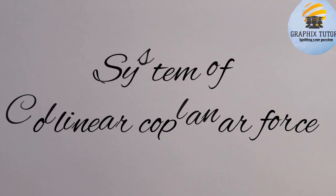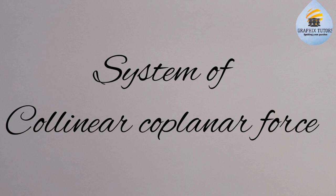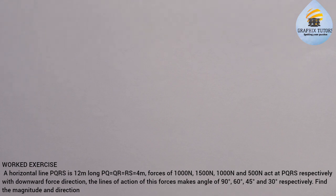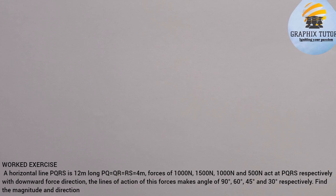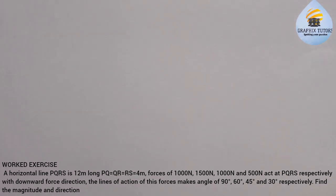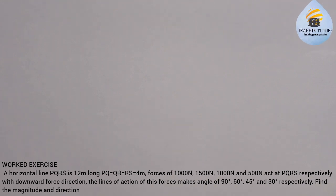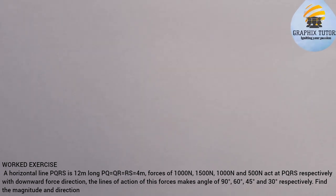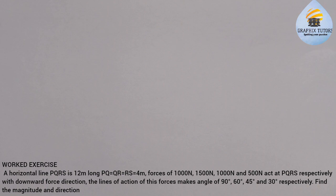My name is Graphics. In this video we solve a problem involving mechanics. It says a horizontal line PQRX is 12 meters long, where PQ equals QR equals RX equals 4 meters. Forces of 1000 N, 1500 N, 1000 N, and 500 N act at P, Q, R, and X respectively with downward force direction. The lines of action make angles of 90°, 60°, 45°, and 30° respectively with PS. Find the magnitude and direction.